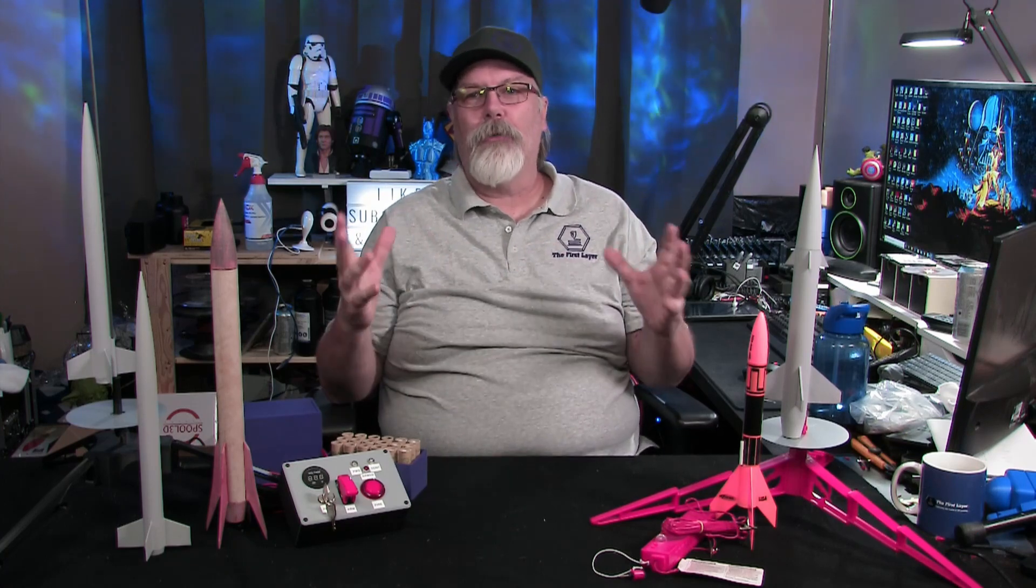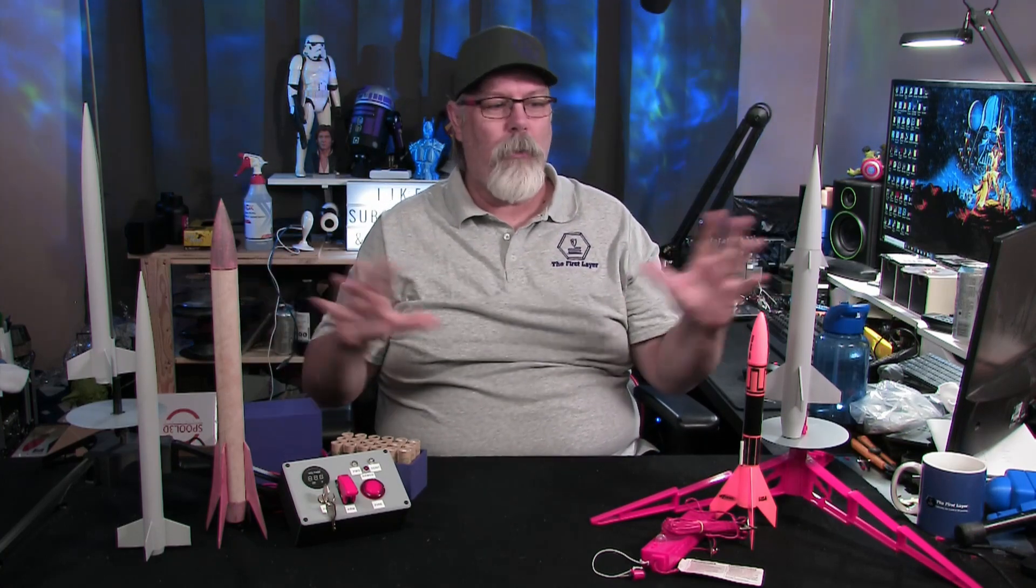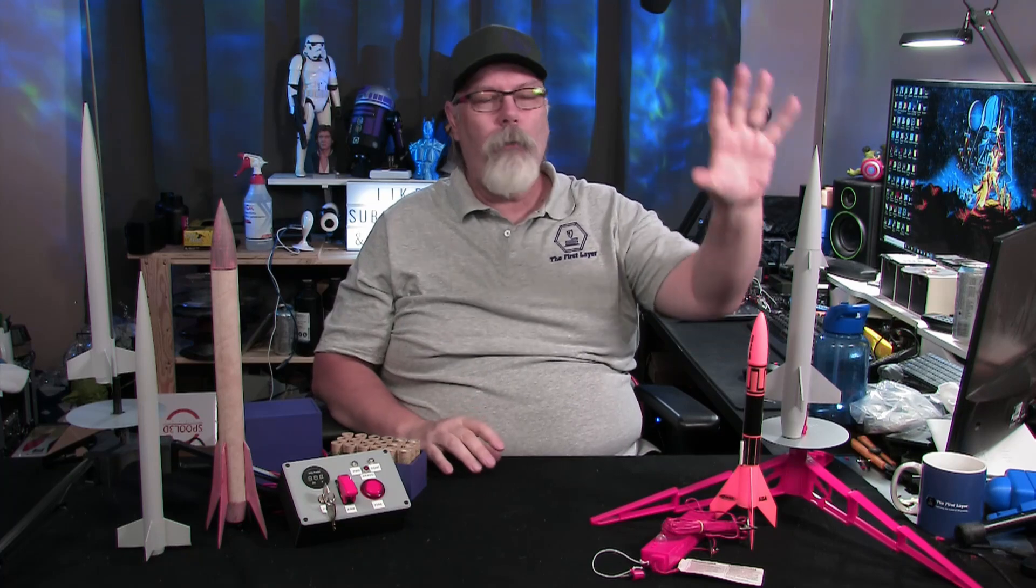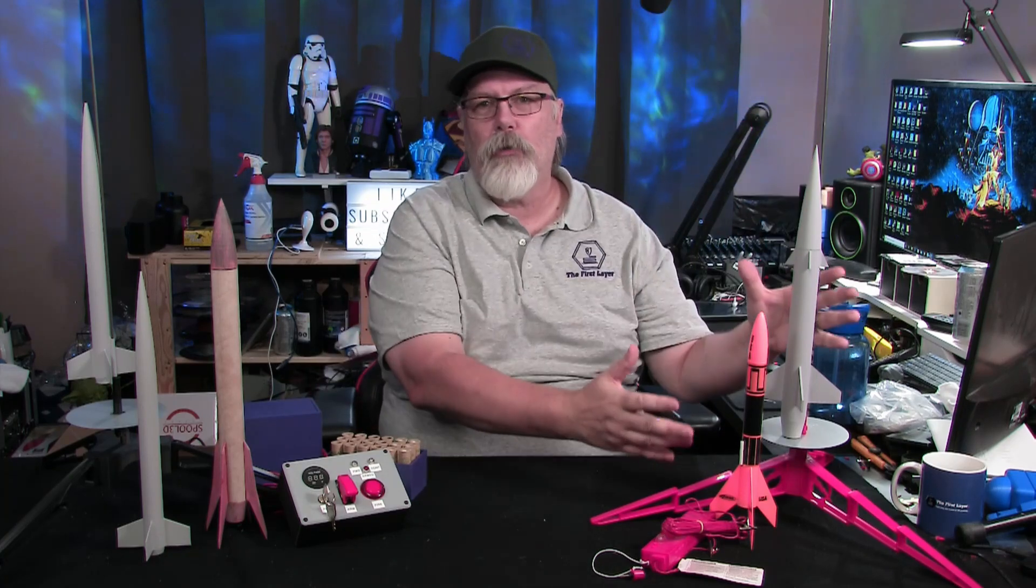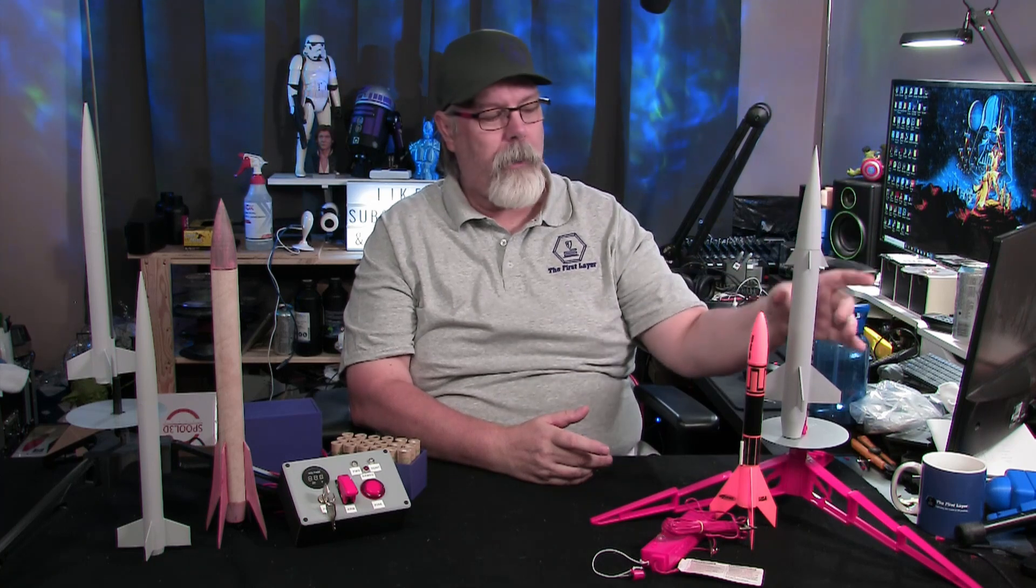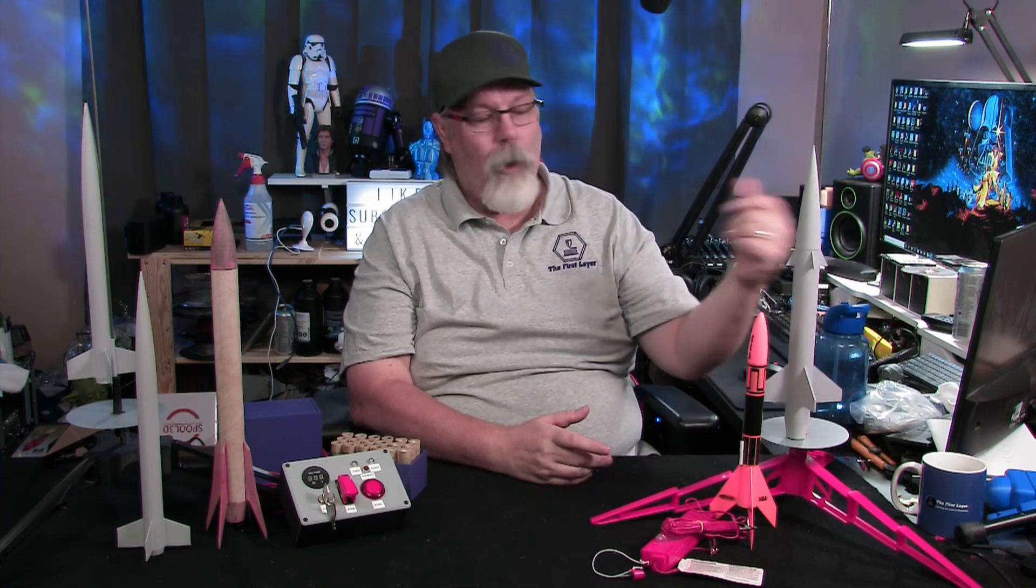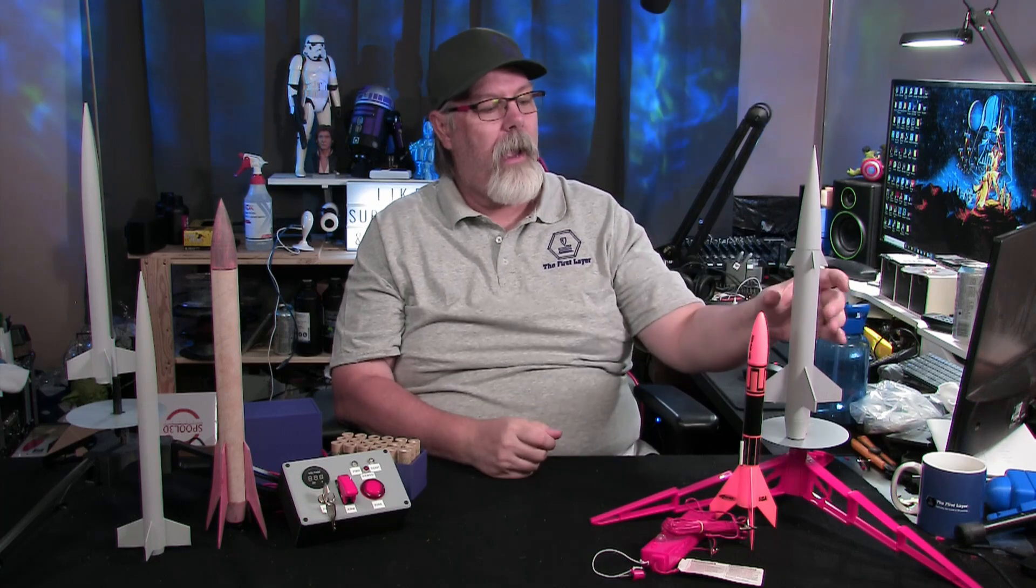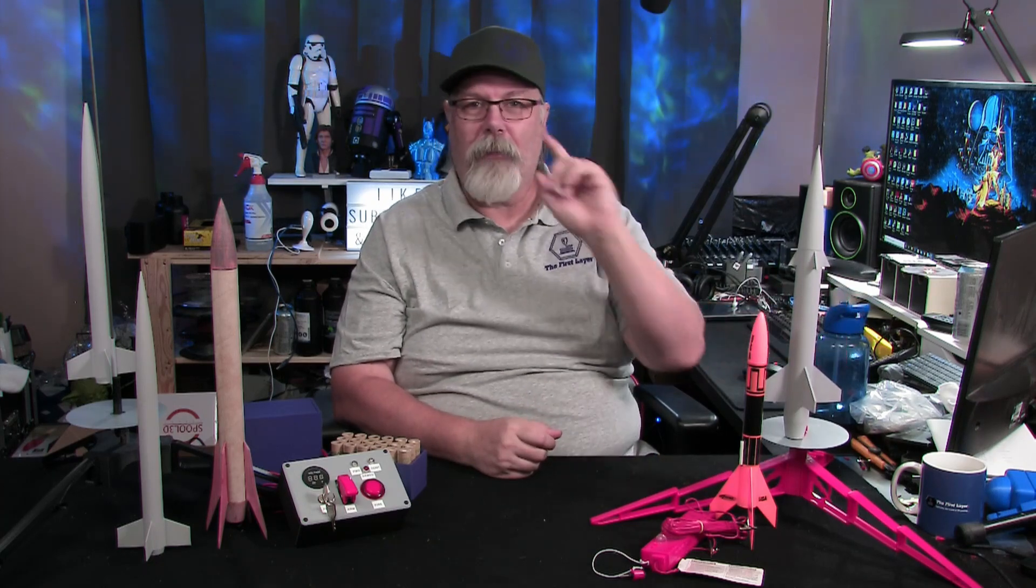Let's dive into what we got going on today. We are into Part 2 of our 3D printed rocket project. As you can see in front of me, we've got lots of stuff. Over on this side, we have commercial rockets. This is the Bullpup rocket, which was sent to us by a fan. And I want to thank that fan for that.